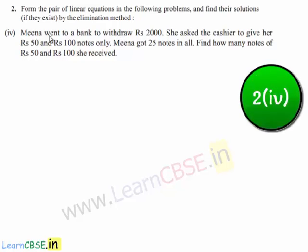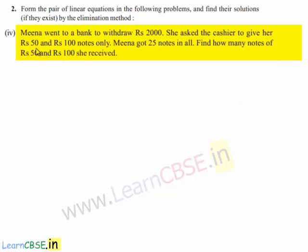Coming to the fourth problem: Meena went to a bank to withdraw Rs. 2000. She asked the cashier to give her Rs. 50 and Rs. 100 notes only. Meena got 25 notes in all. Find how many notes of Rs. 50 and Rs. 100 she received.